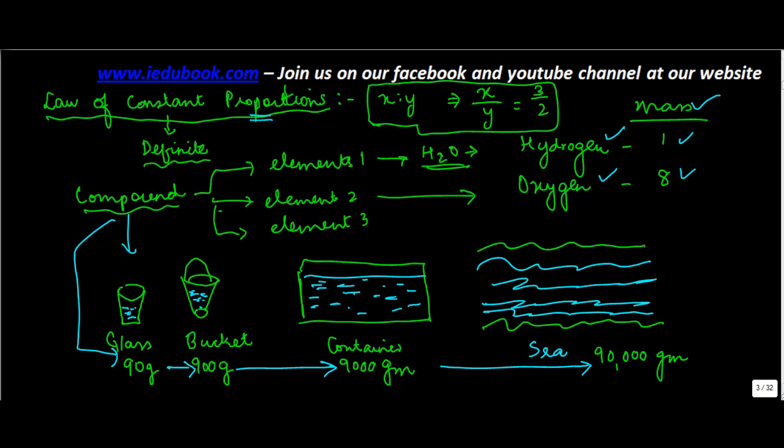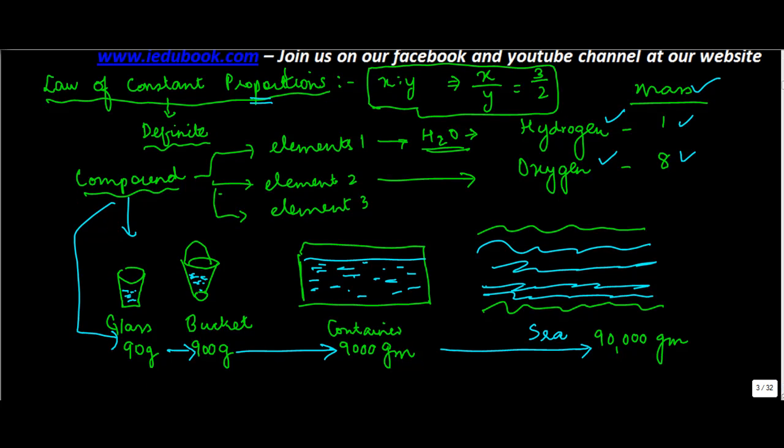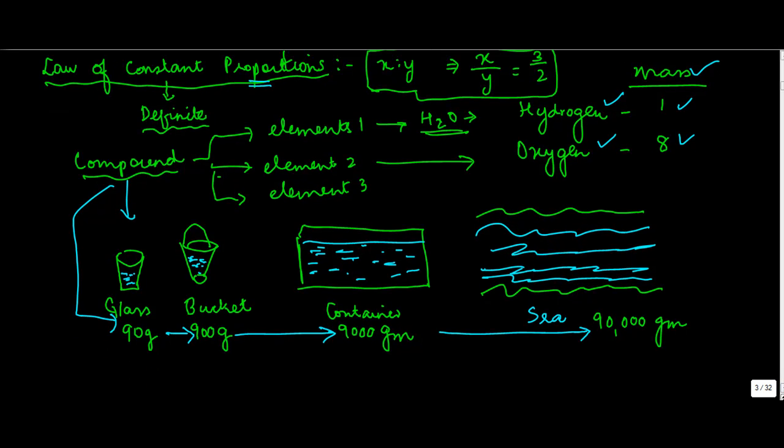Now what does this mean? This means that if the total mass is 90 gram, then the hydrogen is basically 1 is to 8 that's the ratio or rather 1 upon 9 is the mass of hydrogen. How do you do that? 1 upon 1 plus 8. You must have done this in proportion and this is 8 upon 9. So if there is 9 gram of water, out of that 1 gram will be hydrogen and 8 gram will be oxygen.